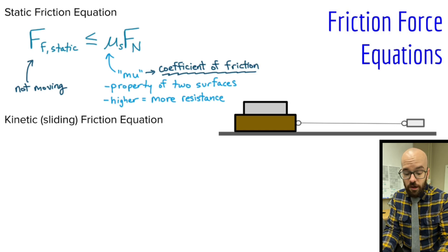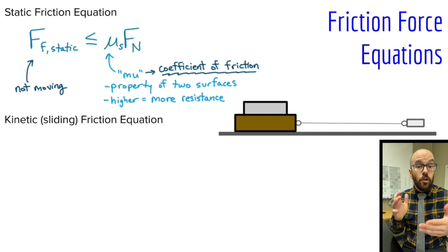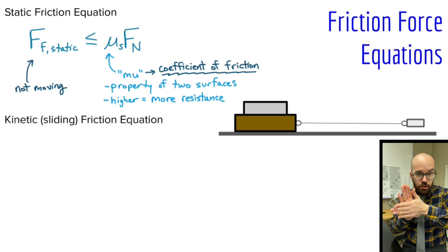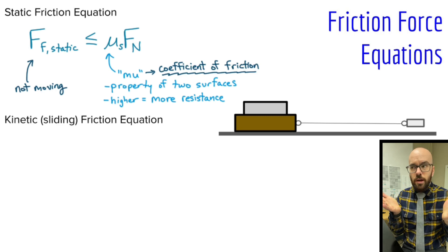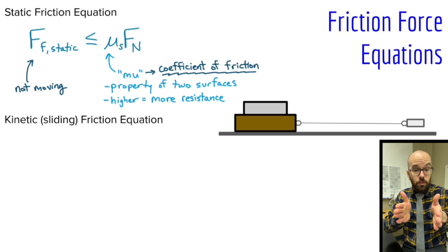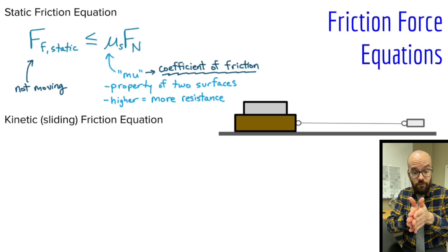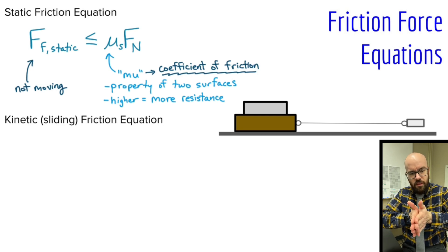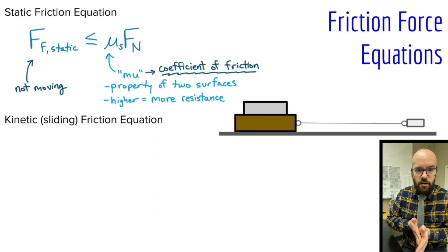The next variable is the normal force. The greater the normal force between two objects, the more friction there's going to be between them. You can use your hands as an example — if you just push your hands together with a little bit of normal force, they slide very easily across each other. But if you push really hard, it's harder to slide, because you're increasing the normal force and therefore there's more friction between your hands.